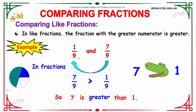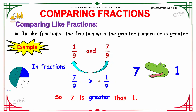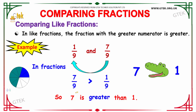Since the denominator is common for both terms, we can simply compare the numerators, that is 7 and 1. When we compare 7 and 1, 7 is considered to be the greatest when compared to 1. So 7 is greater than 1, meaning 7/9 is greater than 1/9.